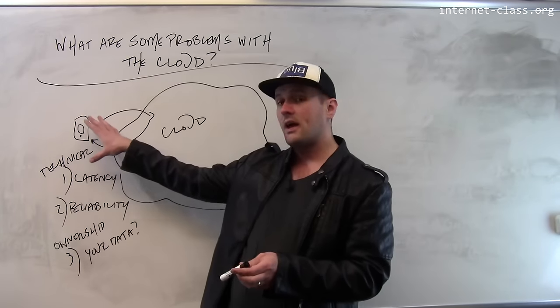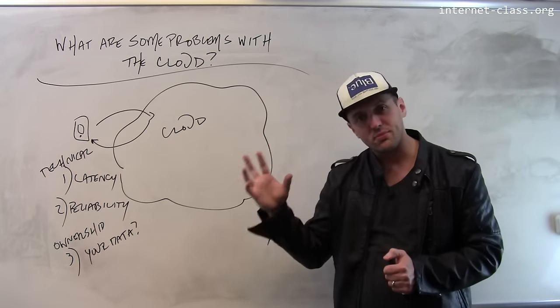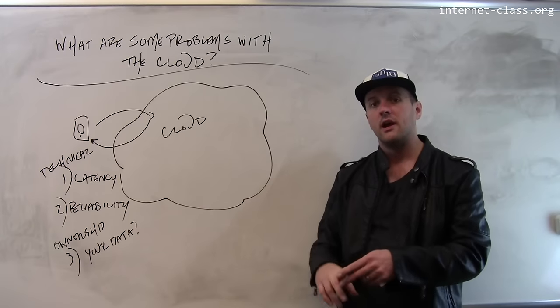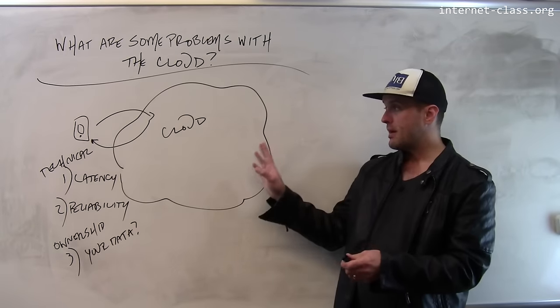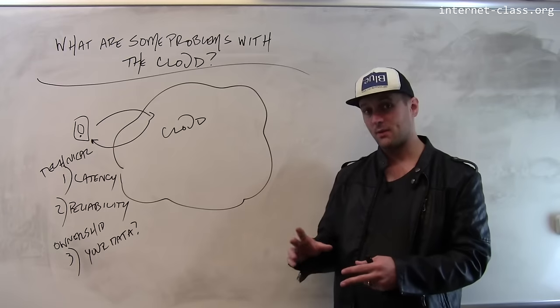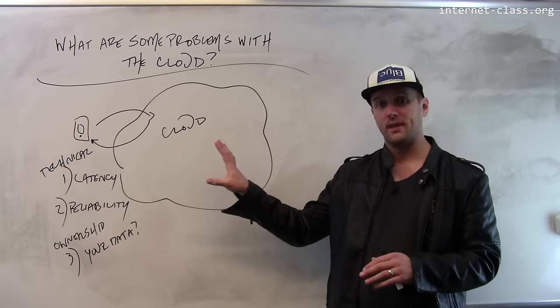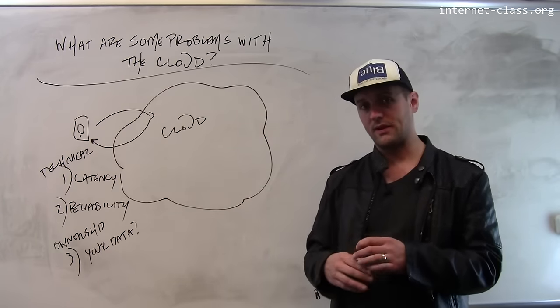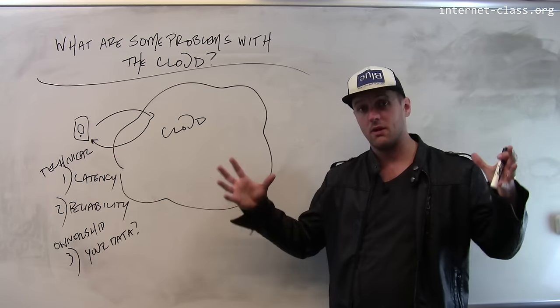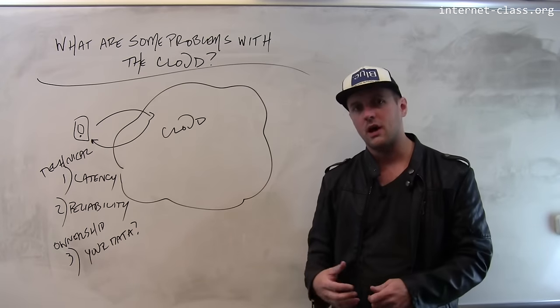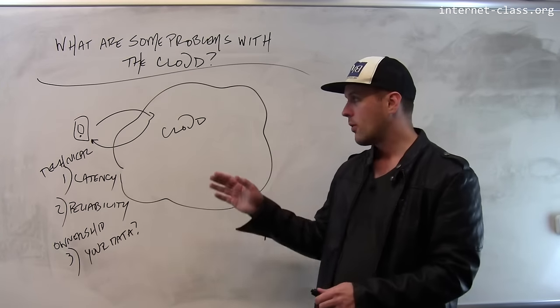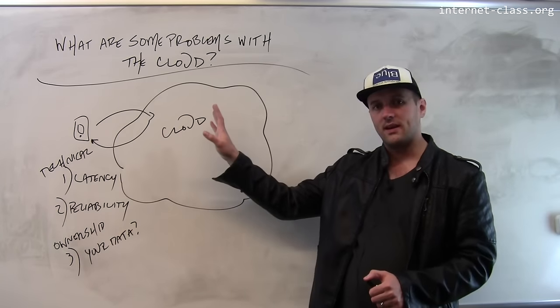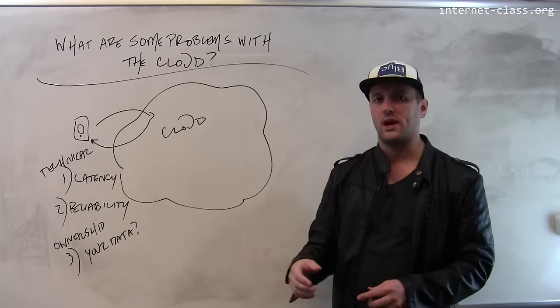On some level this model is quite exciting because it means that the devices that we use can get simpler and simpler—they'll last longer, they'll be smaller. But on the other hand, it also means that we have to trust this cloud, and that's one of the reasons that has given birth to some efforts to actually create not this extreme version of the client-server model but a more decentralized internet where I don't have to trust the entities that provide all of this powerful computation.